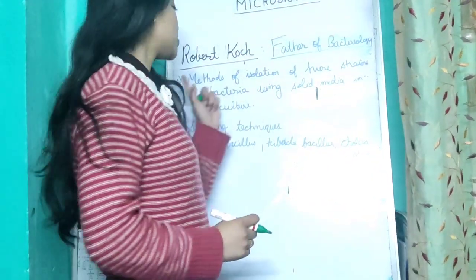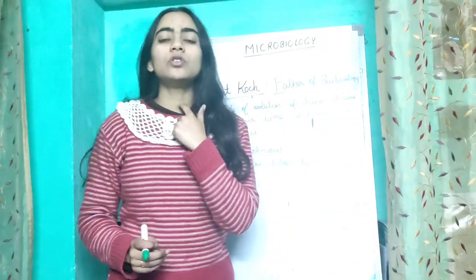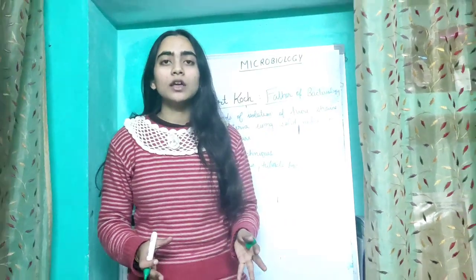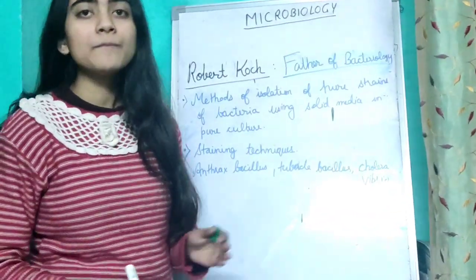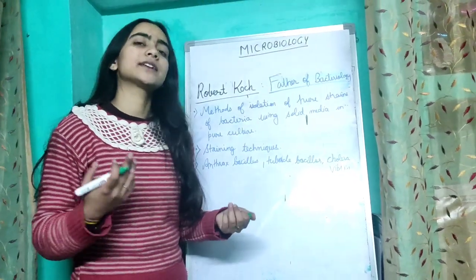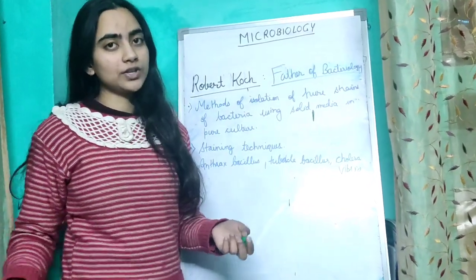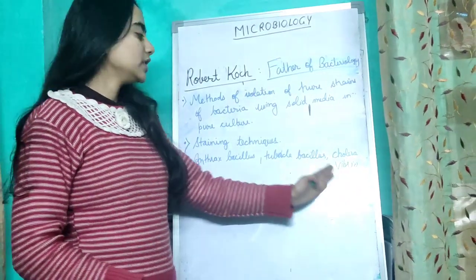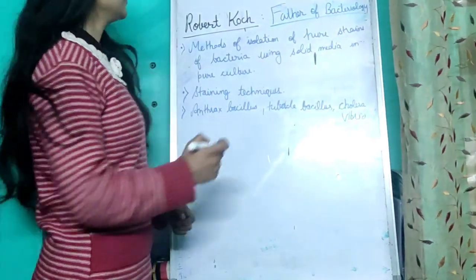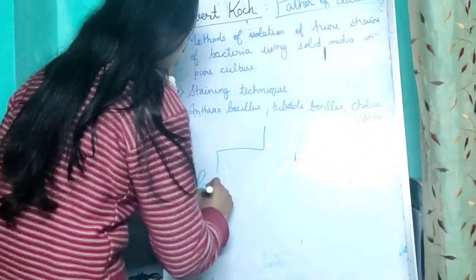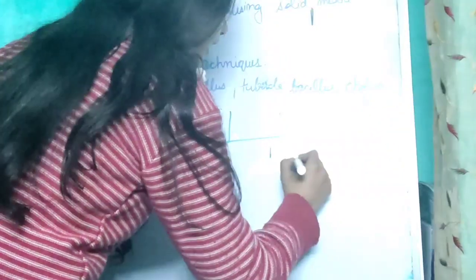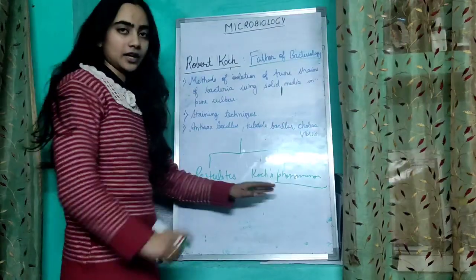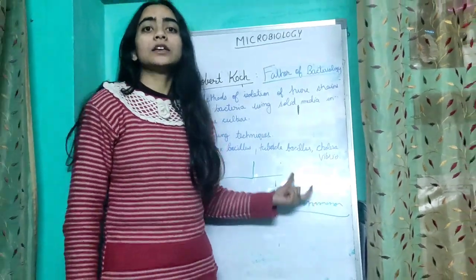Robert Koch is the father of bacteriology. First, he introduced methods of isolation of pure strains of bacteria using solid media in pure cultures — so if there is a bacterial infection and we have to isolate the bacteria, the techniques of pure culture and solid media are from Robert Koch. Next are staining techniques. He also discovered anthrax bacillus, tubercle bacillus, and cholera organisms. Robert Koch has two main things: postulates and Koch's phenomenon.